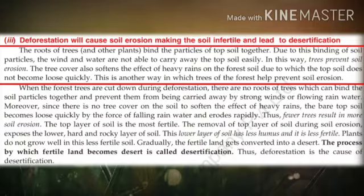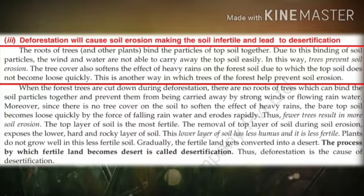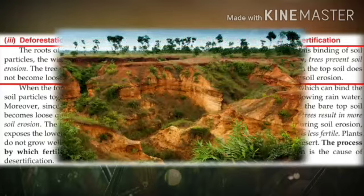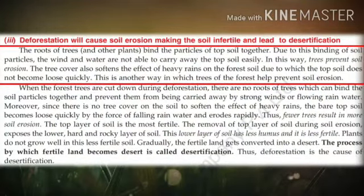The top soil is very fertile, as we have read in the soil chapter. Here you will find the roots of trees and plants, and they bind the particles of top soil together. Due to this binding of soil particles, wind and water are not able to carry away the top soil easily. Trees also soften the effect of heavy rains on the forest soil, due to which the top soil does not become loose quickly.